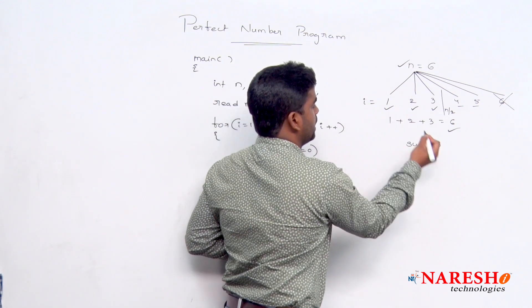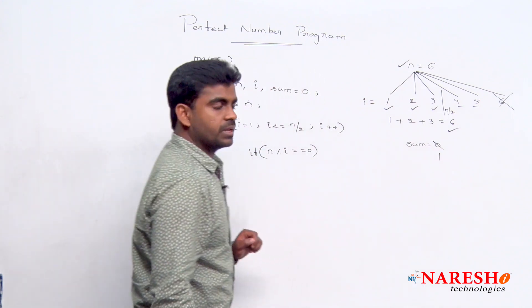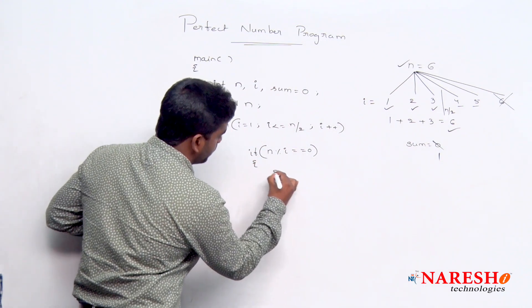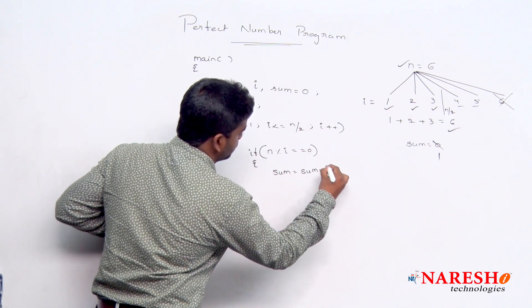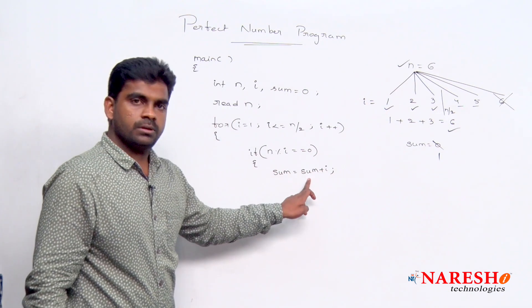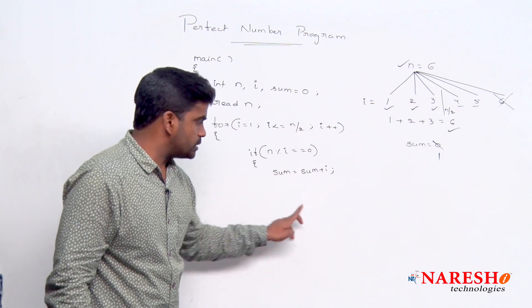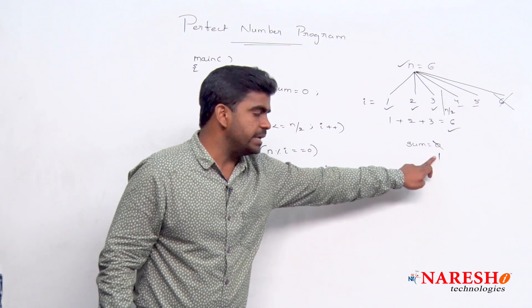So that i value we are adding to sum is nothing but inside, sum equal to sum plus i. Sum value 0, 0 plus 1 is 1. 1 you are storing into sum. So sum value we updated.